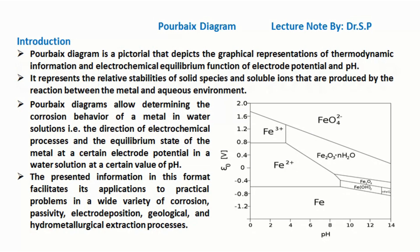Pourbaix Diagrams allow determining the corrosion behavior of a metal in water solutions, that is the direction of electrochemical processes and the equilibrium state of the metal at a certain electrode potential in a water solution at a certain value of pH.